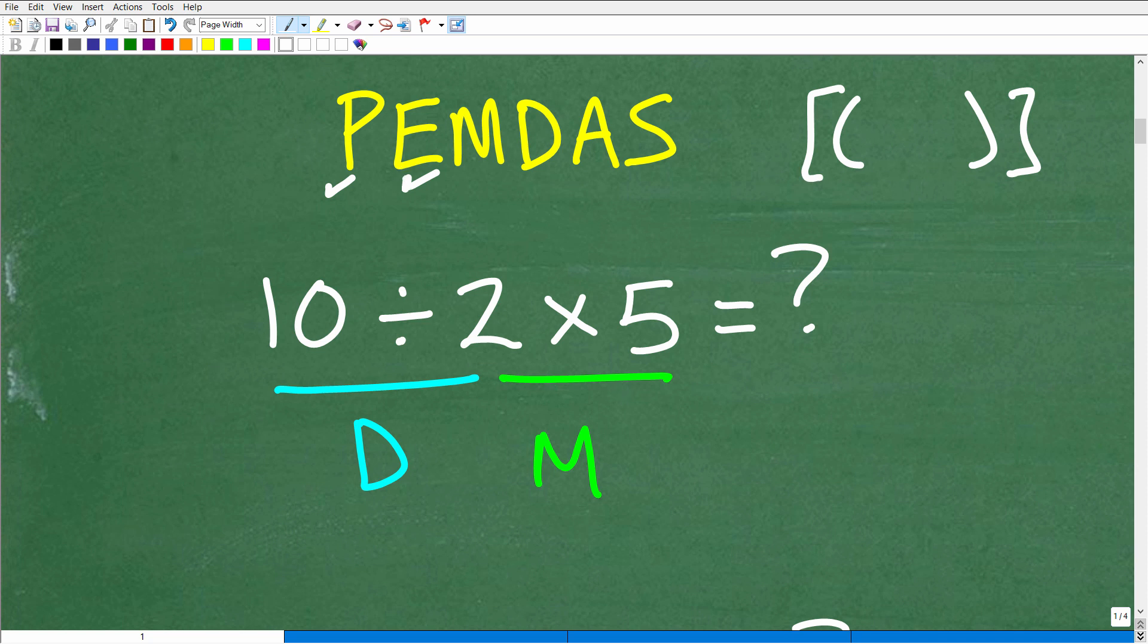Then we're going to be looking for E. That stands for exponents or powers. So if we see anything like this, 2 cubed, which, of course, that's 2 times 2 times 2 or 8, we would do that next. We don't see anything in this problem right here.